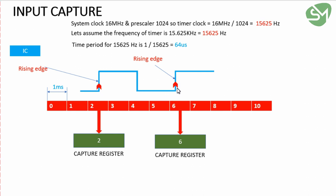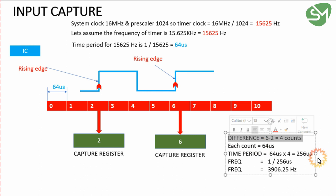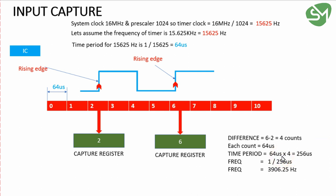You can see this is a complete pulse — this is the on time and this is the off time. This is the start of this pulse and this one is the start of the next pulse. So we got the count values for one complete pulse. When I subtract these two values I get 4 counts — 6 minus 2 is 4. For each count the timer takes 64 microseconds, so for 4 counts the time period is 64 microseconds times 4, that is 256 microseconds.